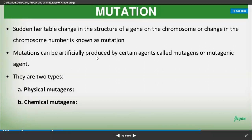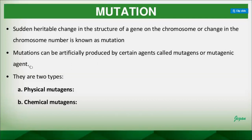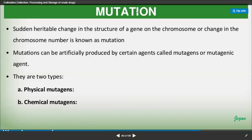Mutation can be artificially produced by certain agents called mutagens or mutagenic agents — agents that change the genetic material or gene sequences, causing mutation. There are two types: physical mutagens and chemical mutagens.